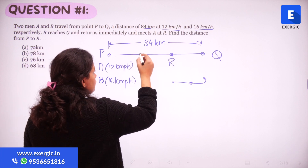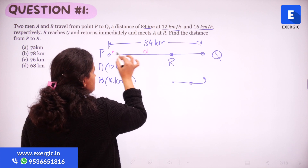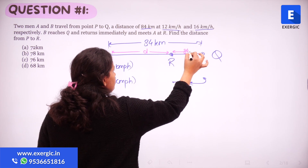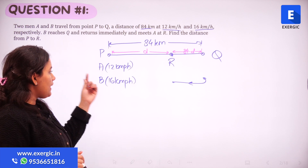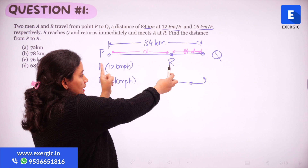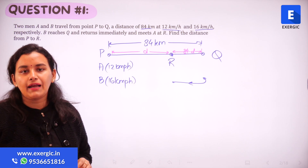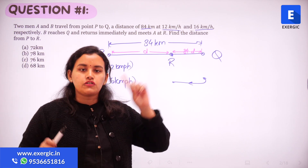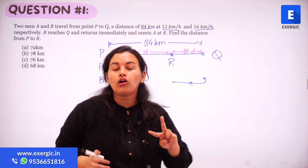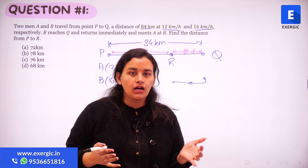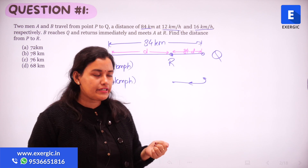Suppose the distance PR we want to find is D, so the remaining distance QR is 84 minus D. A has covered distance D, whereas B has covered the entire 84 km and then an additional 84 minus D. The second key step in TSD questions is to find out which variable is constant — time, speed, or distance — using the relation speed equals distance divided by time.